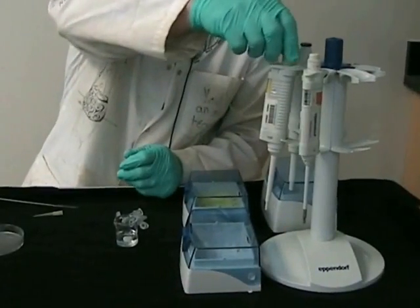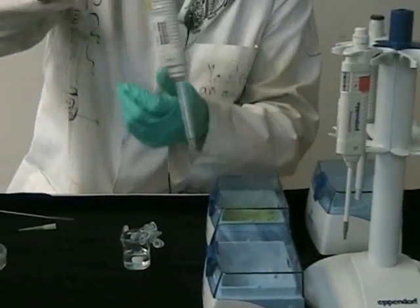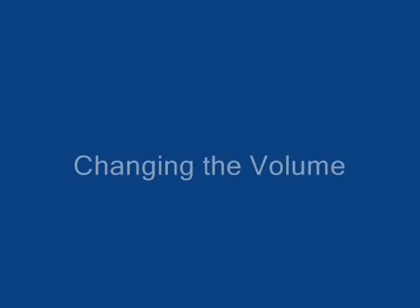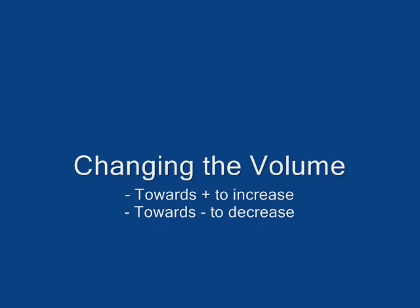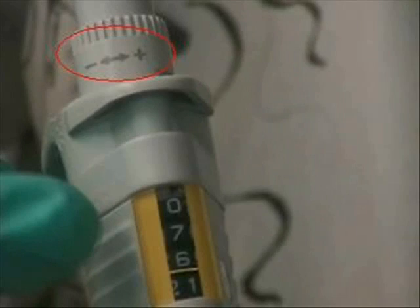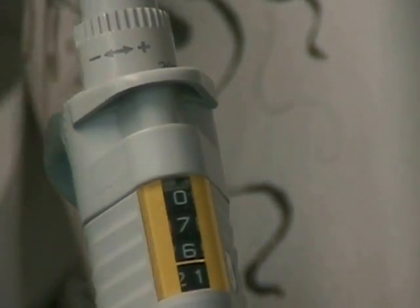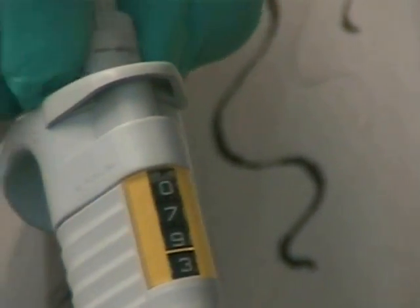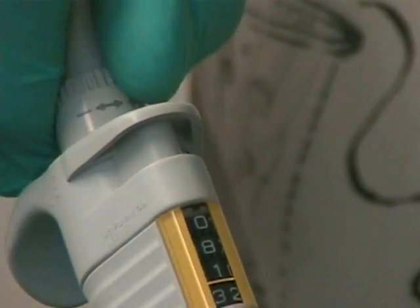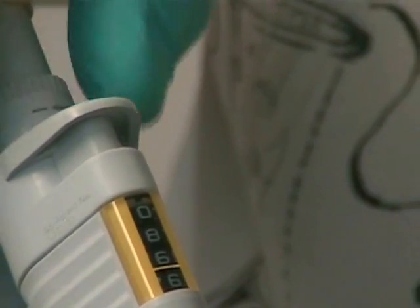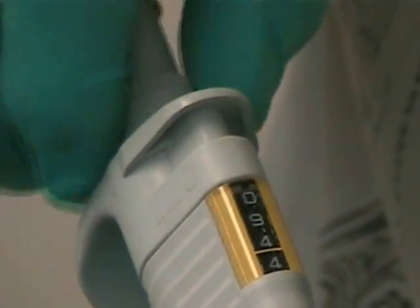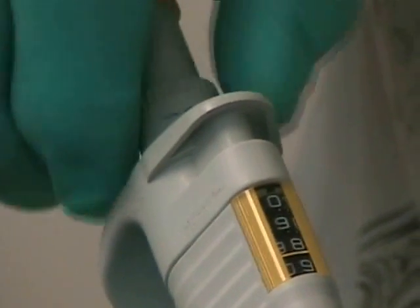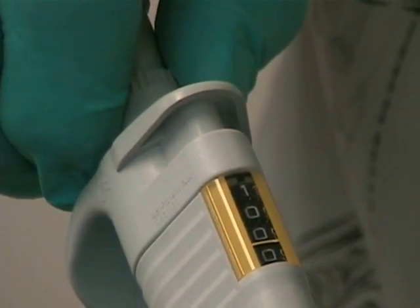In this video we're going to look at how we adjust the volume of a pipette. To change the volume, you can dial up or down according to the volume you want. In this exercise we want to pipette 100 microliters. I'm dialing up, and when I reach 100, it's imperative to make sure you've corrected the fraction to 0.0.